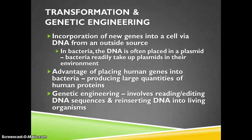Transformation is incorporating new genes into a cell by way of DNA from an outside source. In bacteria, the DNA in question is usually put into a plasmid because bacteria readily take up plasmids placed in their environment. The advantage of putting human genes into bacteria is that it allows you to make large quantities of the human proteins you're looking for, such as insulin or human growth hormone — much larger quantities than could be collected from people.